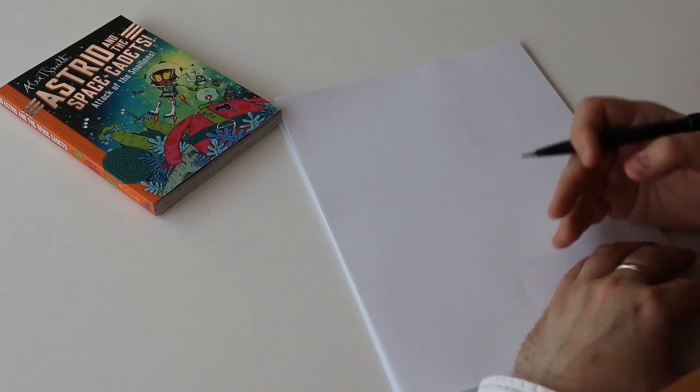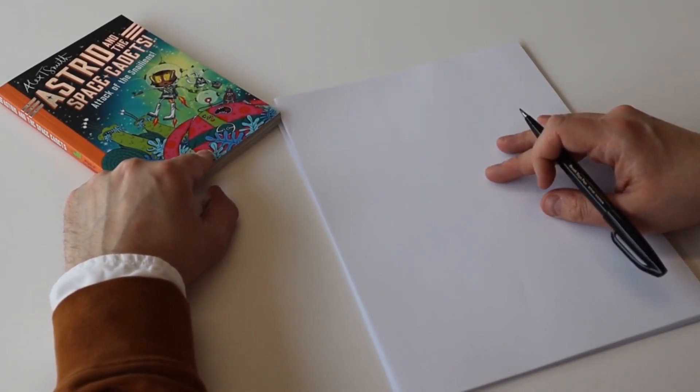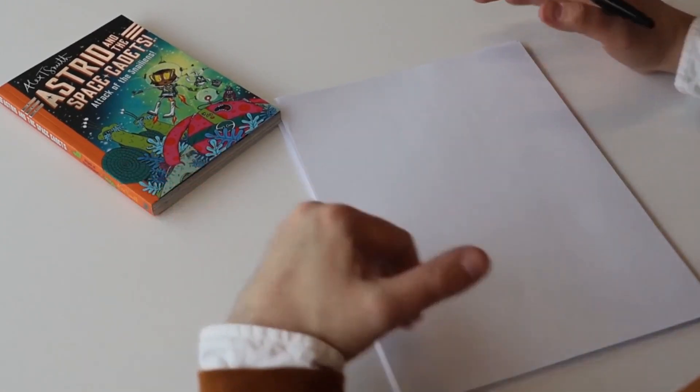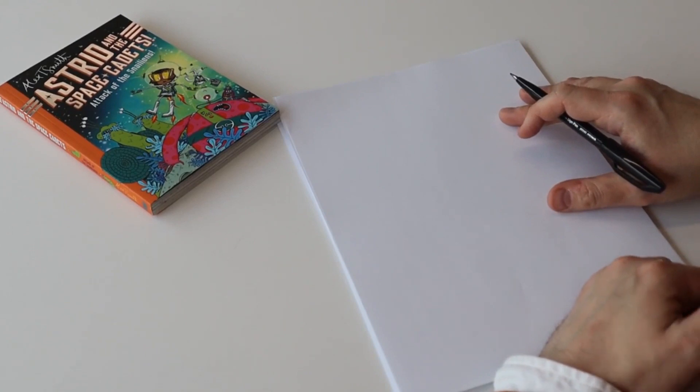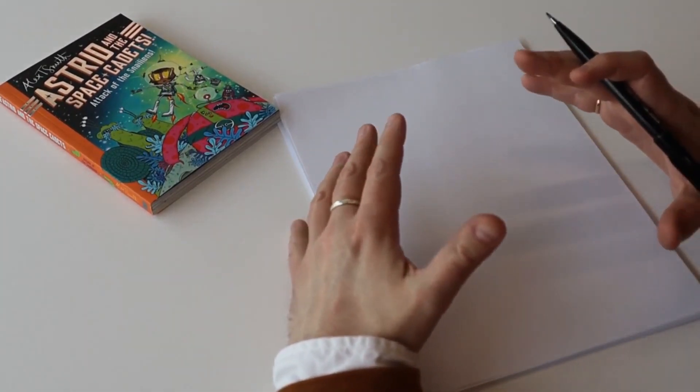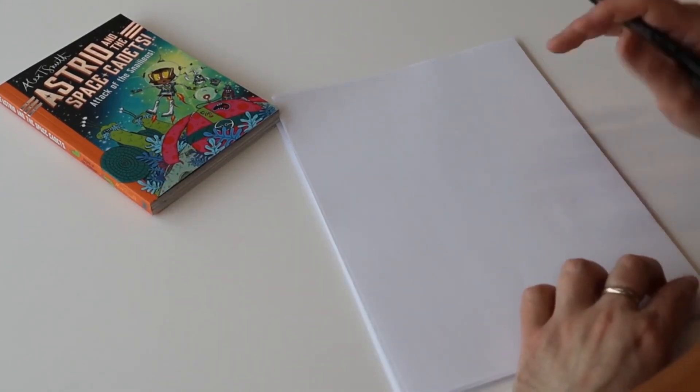Okay, so we're going to draw Beryl. Beryl is the tallest of the space cadets and she's bright pink and spotty. We've got a piece of paper and our pen or pencil. To draw Beryl you need to be able to draw lots and lots of circles, but we'll do them step by step.